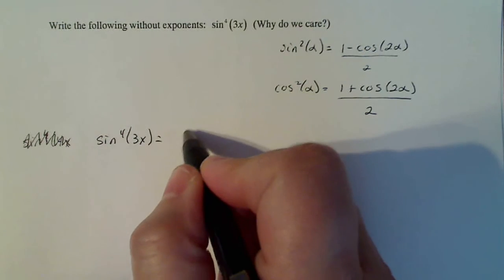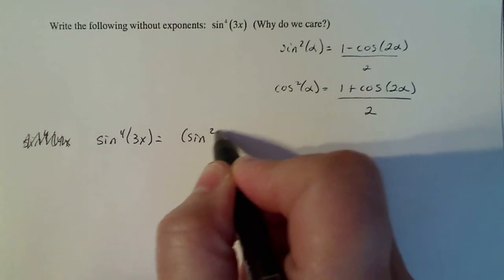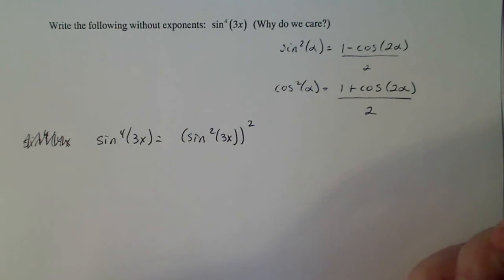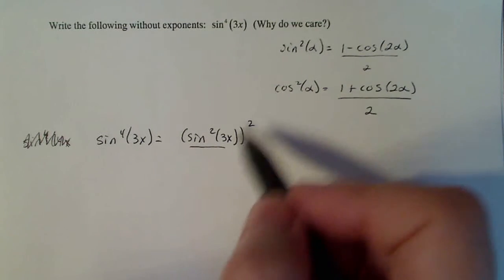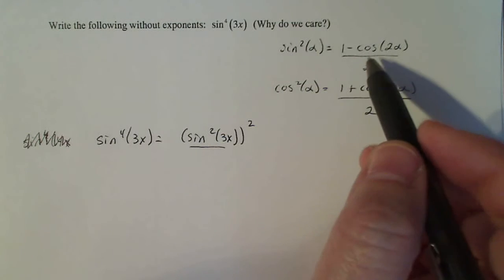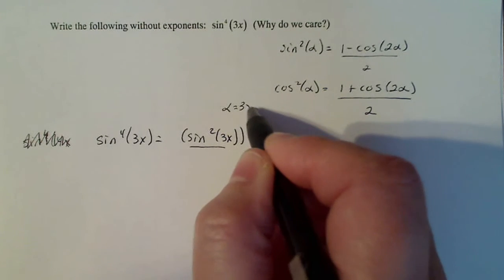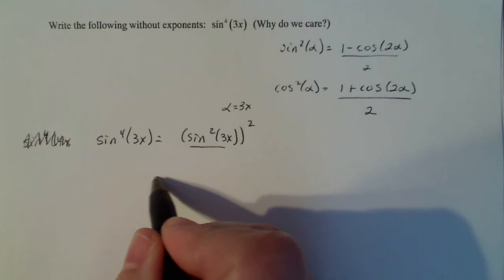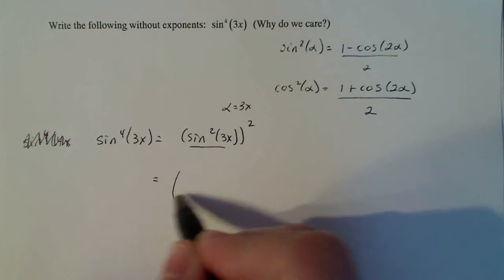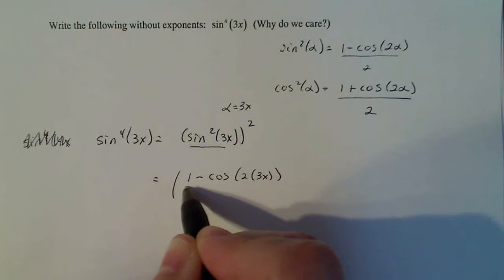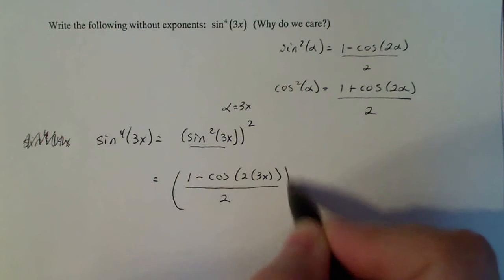That is going to equal sine squared of 3x to the second power. Now I'm just going to replace sine squared of 3x with this particular identity where alpha is going to be 3x. So if I put that in there, I get 1 minus cosine of 2 times alpha, which is 3x in my case, divided by 2 quantity squared.